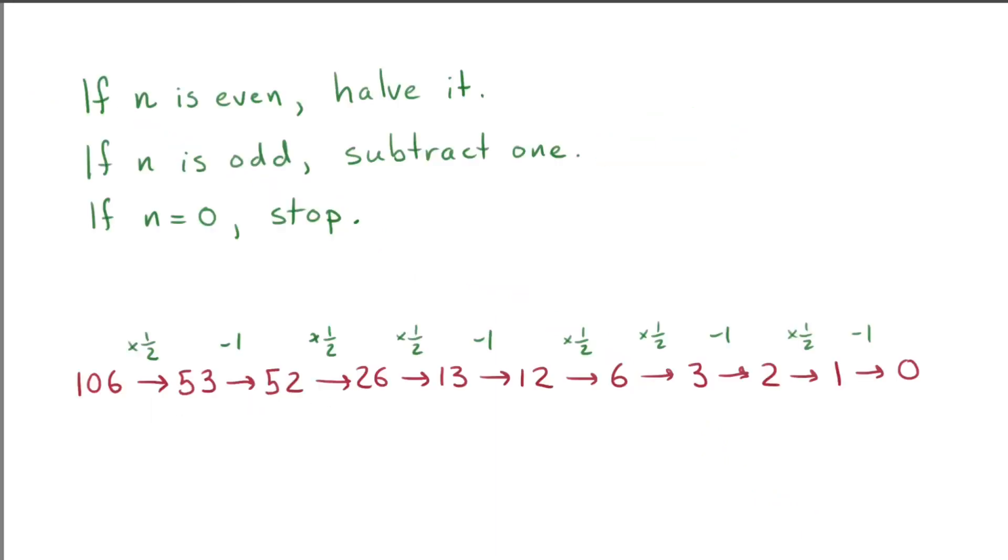So here's the system I'm proposing. If n is even, then halve it. In other words, the opposite of doubling. If n is odd, then subtract one, the opposite of adding one. When I get to zero, stop.